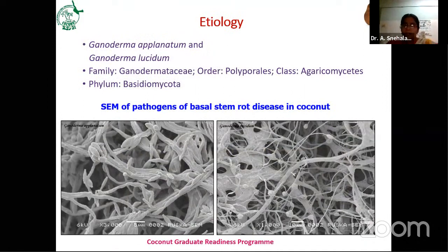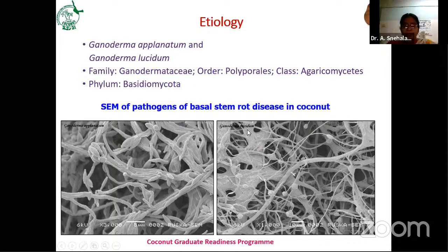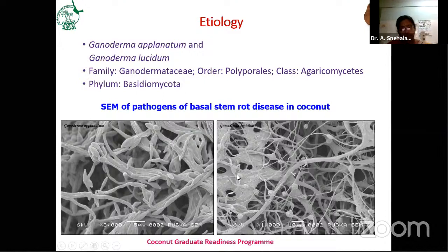Coming to the etiology, the disease is caused by Ganoderma aplanatum and Ganoderma lucidum, belonging to family Ganodermataceae, order Polyporales, class Agaricomycetes, and phylum Basidiomycota. These are scanning electron microscope photos of G. aplanatum and G. lucidum. In case of G. aplanatum, the spores are dumbbell-shaped, and in case of G. lucidum, ball-like spores can be seen.